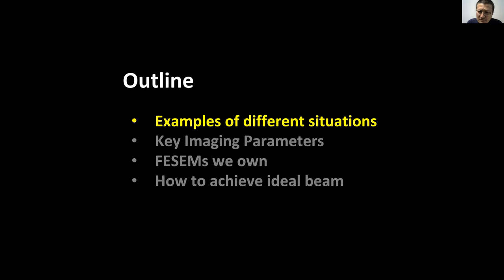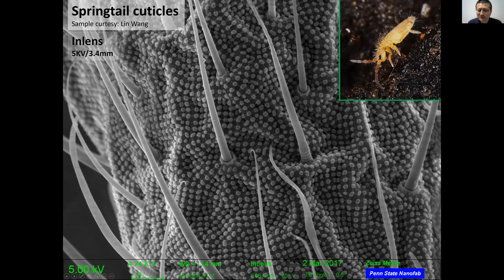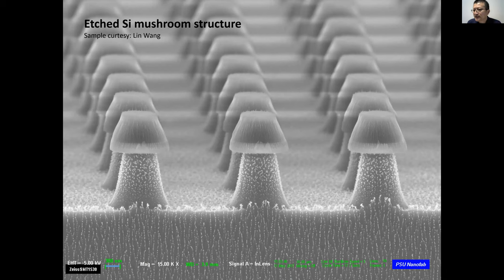Let's start with examples. We fabricate devices, and here's a real example from a research group in my building. This is a small bug called a springtail. When you look at it under the SEM, you can see the body, hairs, and little crystals with a special surface pattern. The group wants to use silicon to fabricate the same mushroom structure, because the bug's body has a special property called super water repellency.